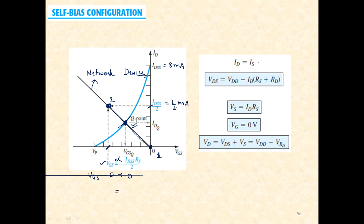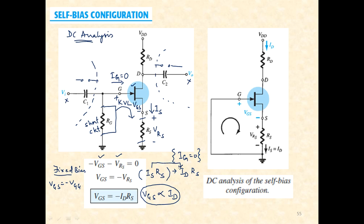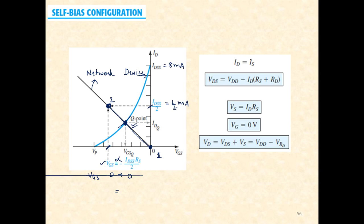VGS equals minus VRS, and VRS can be written as IS·RS. Since gate current IG is zero, IS equals ID, so VRS equals ID·RS — that is why the term ID·RS appears in the expression. For the output loop, VDS equals VDD minus ID·(RS plus RD).